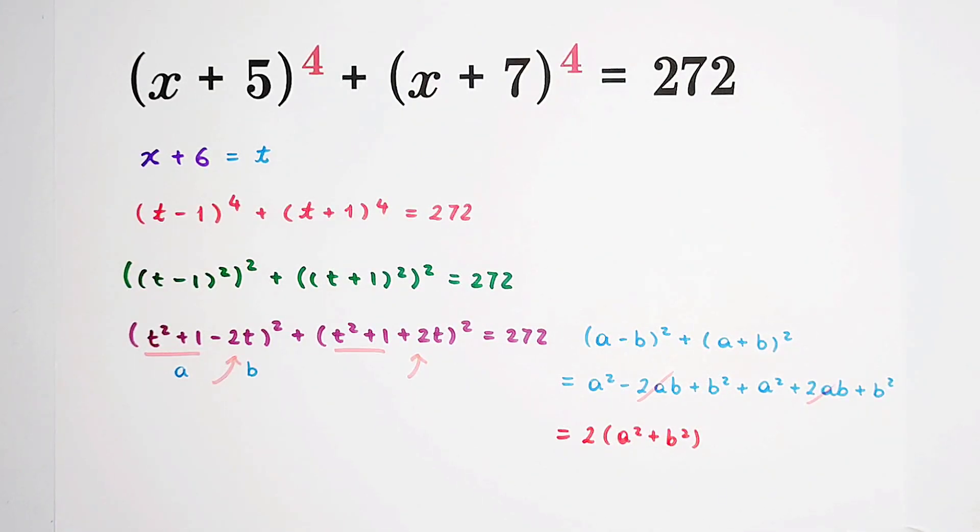Very good. So that means the left-hand side is just 2 times t squared plus 1 all squared plus 2t all squared equals 272. This is t to the power of 4 plus 2t squared plus 1, and this is 4t squared. Divide 2 on both sides. It is 136.